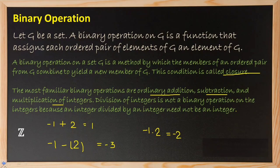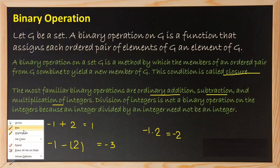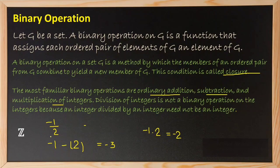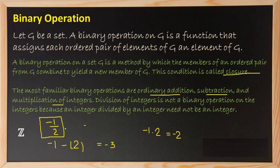Now let us check division. Taking minus 1 divided by 2, we get minus one-half. Minus one-half is not an integer — it is in p/q form, it is a fraction. So we can say that division of integers is not a binary operation on the set of integers, because an integer divided by an integer need not be an integer.